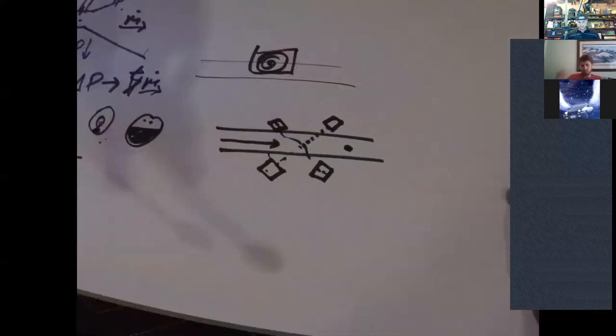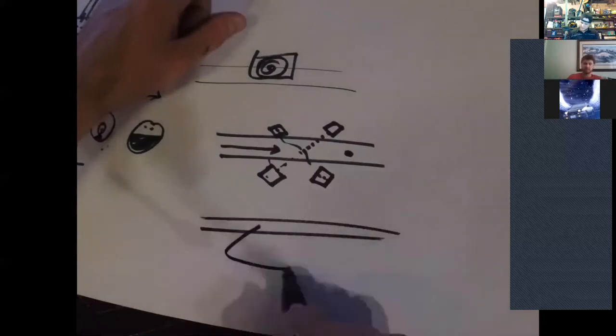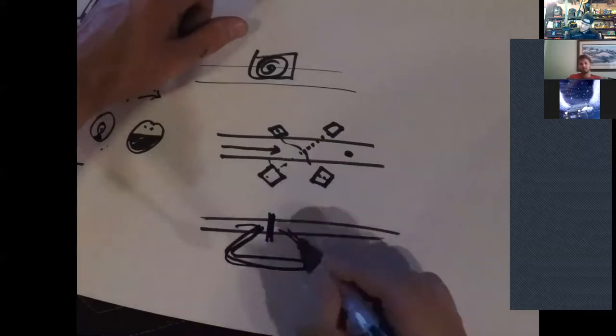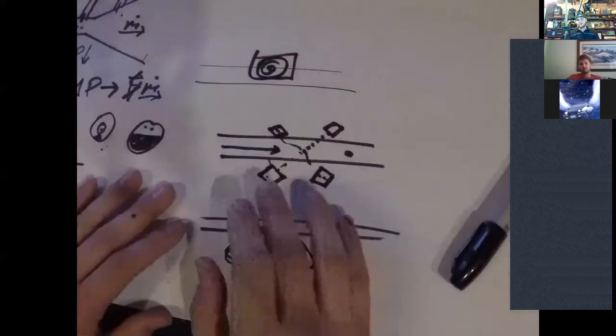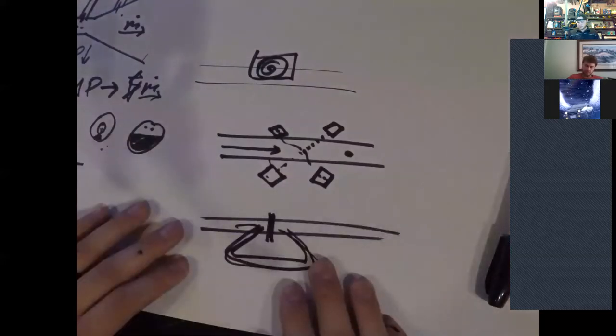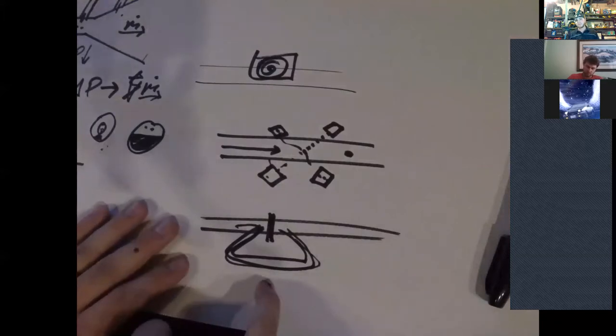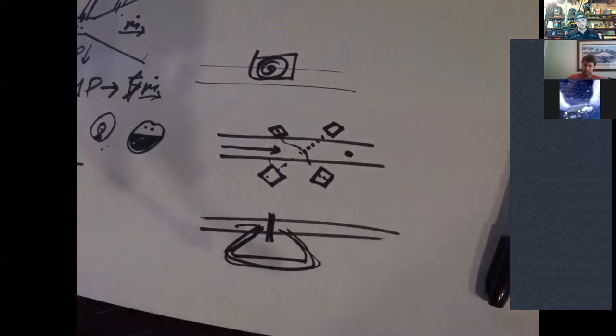The other super nice thing about this configuration is it doesn't require you to cut into the pipe or add anything into the process stream. So there's actually ultrasonic flow meters that you can go and temporarily install by strapping it onto the outside of a pipe. Depending on your process fluid in this pipe, you can use magnetic flow meters, but that only works with certain types of process fluids.